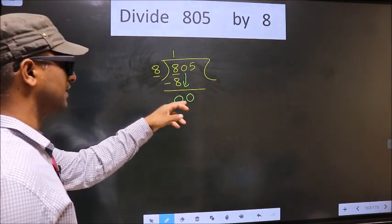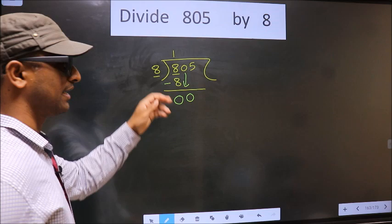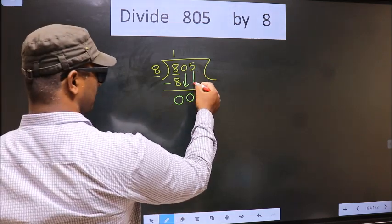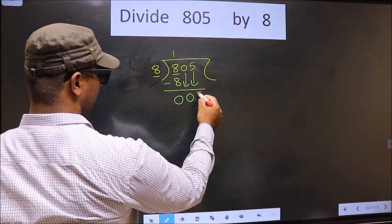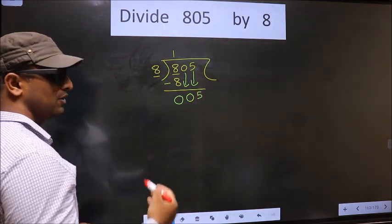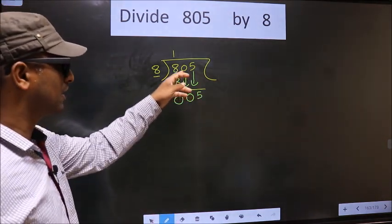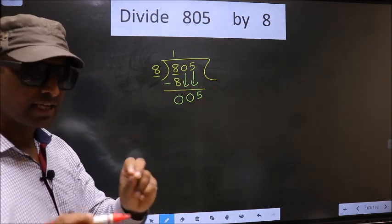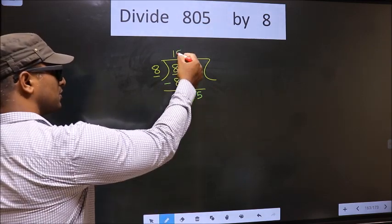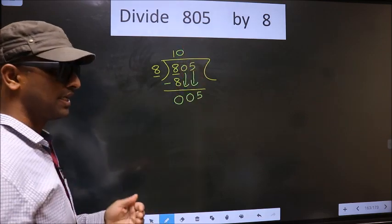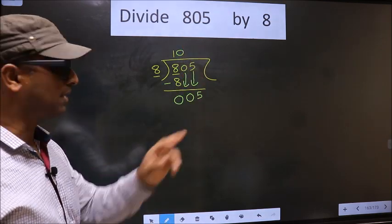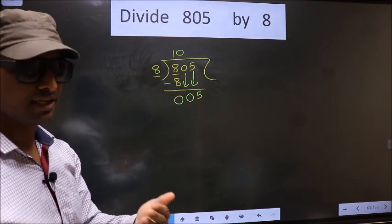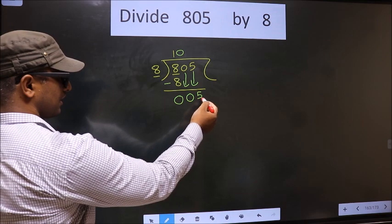We have 0 here. 0 is smaller than 8, so what we should do is we should bring down the other number 5 down here. You remember, whenever you brought down two numbers, then compulsory put 0 in the quotient. I repeat: whenever you brought down two numbers, then compulsory put 0 in the quotient.